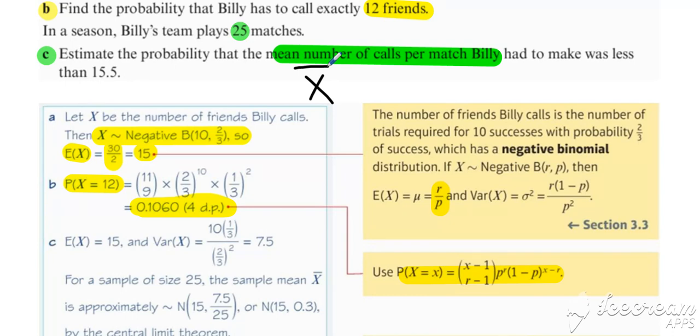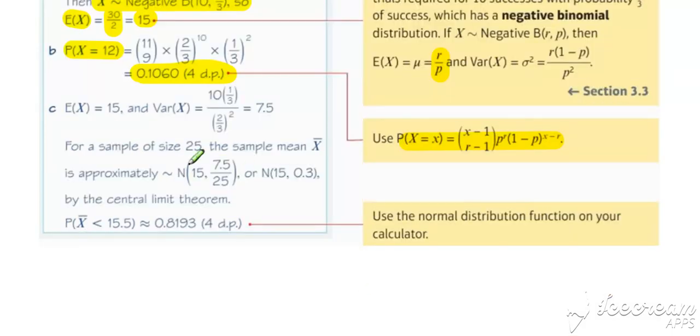That's the sign to look for in a central limit theorem style question. What do we need? We need the expected value of X, which is 15, worked out above. We also need the variance of X using the formula r times (1-p) over p-squared.